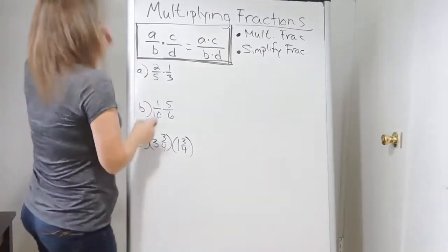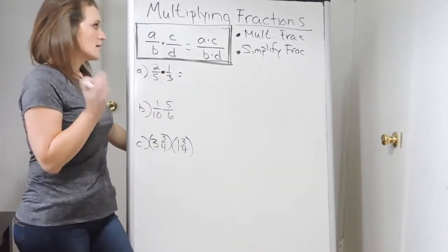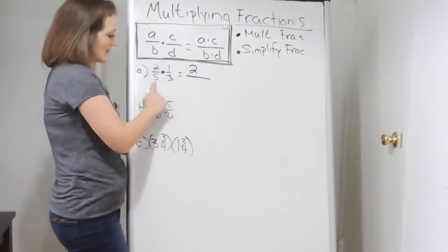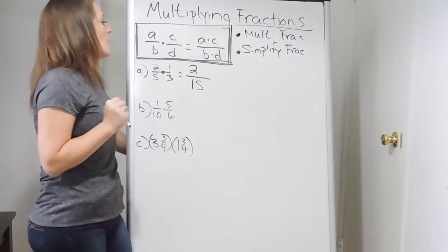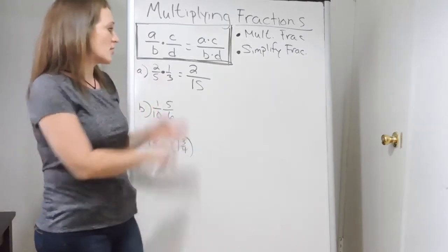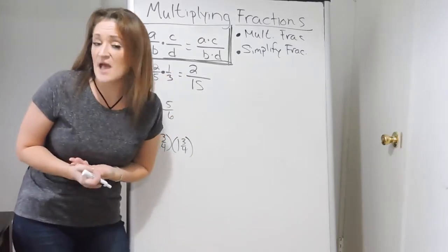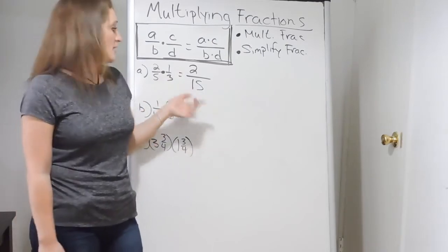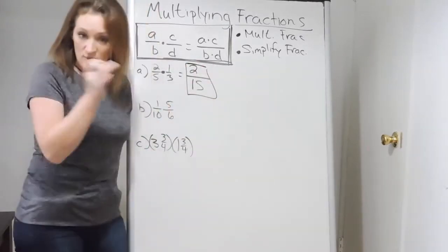Starting with Example A: 2 over 5 times 1 over 3. Step one, multiply fractions — go straight across. 2 times 1 is 2, over 5 times 3 is 15. It's really that simple — just multiply straight across. Then check your answer: is this fraction simplified? Look at 2 and 15 — do they have anything in common? The only things that go into 2 are 1 and 2, and 2 does not go into 15. They have nothing in common, so 2 over 15 is our final answer.